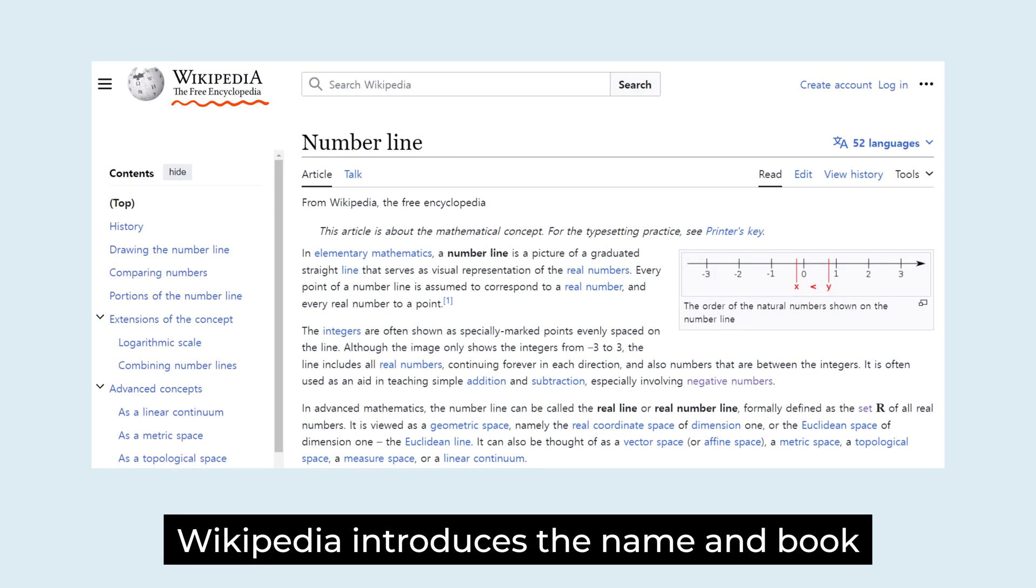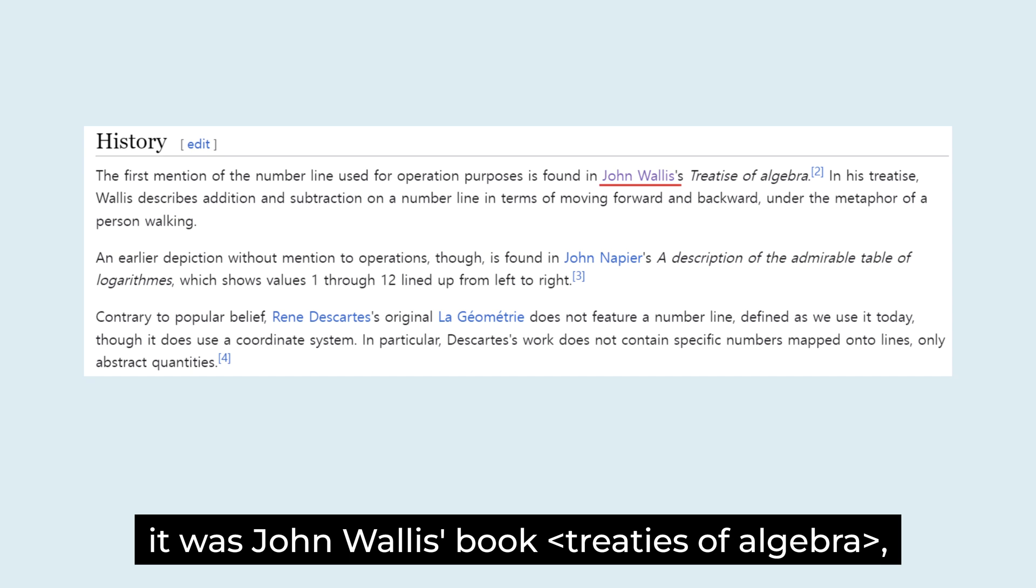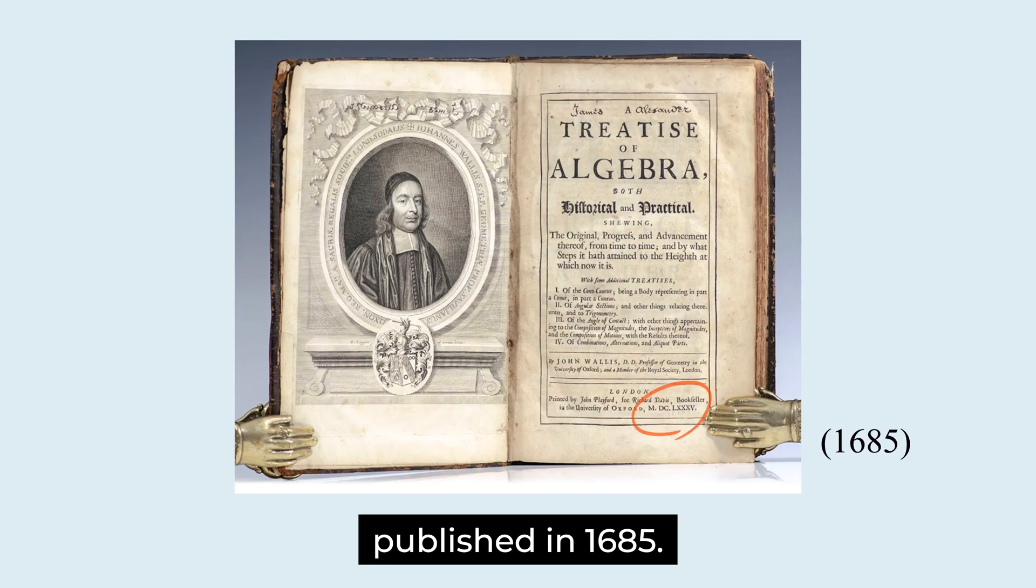Wikipedia introduces the name and book of the person who first mentioned the number line. It was John Wallis' book, Treatise of Algebra, published in 1685.